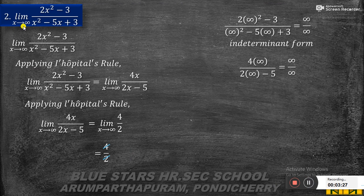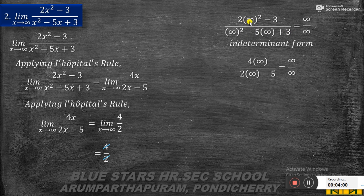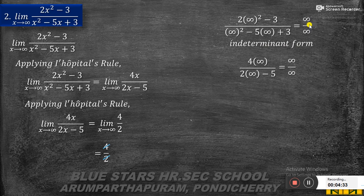The second problem: limit x tends to infinity of (2x squared minus 3) by (x squared minus 5x plus 3). Writing the given limit and substituting x equal to infinity: we get 2 times infinity squared minus 3 in the numerator, and infinity squared minus 5 times infinity plus 3 in the denominator. Since any number multiplied by or added to infinity is infinity, we get infinity by infinity — an indeterminate form.